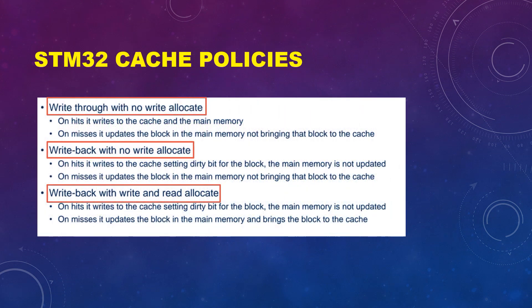Here is a picture from ST's document about the policies used in STM32 Cortex-M7. We have write through with no write allocate. In case of a hit, the data is updated in the cache and the memory. In case of a miss, the data is updated in the memory, but that memory block will not be copied into the cache, since this is no write allocate.